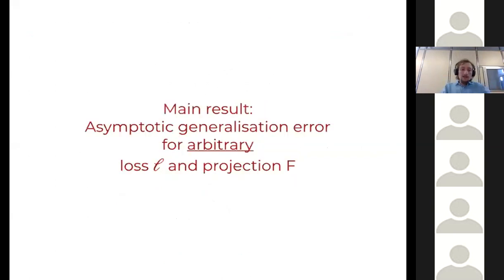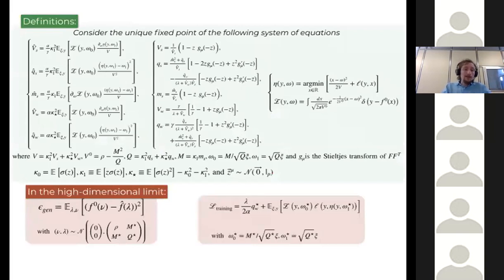What is our main result? We use statistical physics methods to derive it, but our main result is a generalization error and training loss formula for this problem in the asymptotic high dimensional limit. The formula looks a bit complicated, but it's not so hard to understand. What it's telling you is that the generalization and training loss only depend on a couple of low dimensional parameters. These low dimensional parameters can be obtained by solving a set of fixed point equations. You just plug these equations into the computer and iterate them, and you get the generalization and training loss. It depends both on the loss which is general, depends on the task parameterized by f_0 as previously discussed.